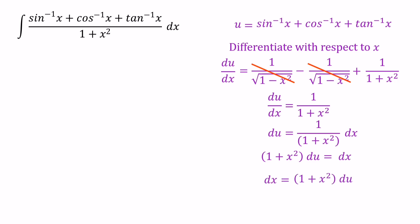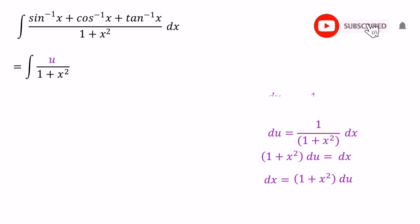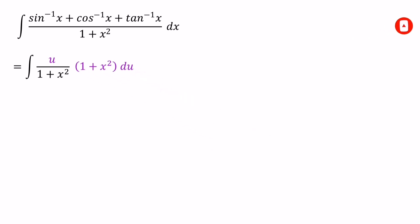Let's substitute this into our integral. Instead of sin inverse x plus cos inverse x plus tan inverse x, we substitute u. Instead of dx, we substitute 1 plus x squared times du. Then we can cancel out the 1 plus x squared in the numerator with the 1 plus x squared in the denominator.